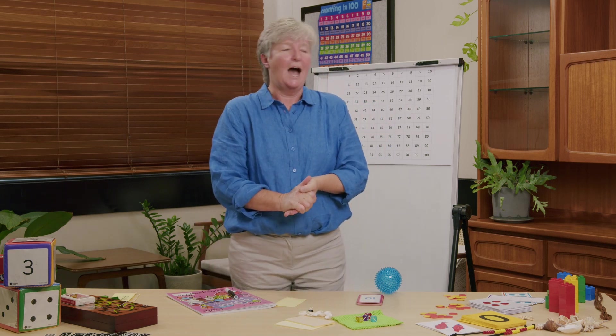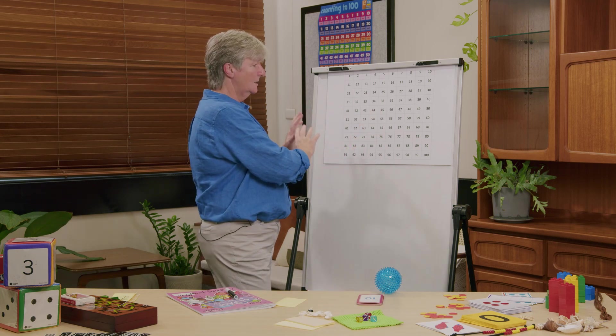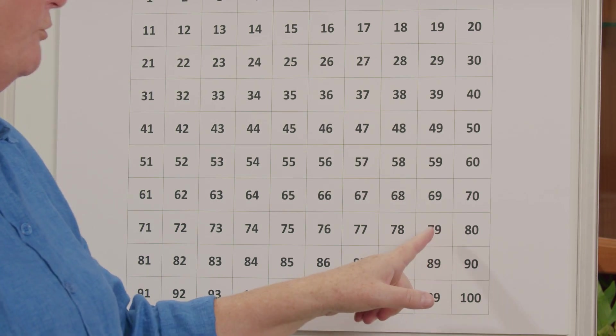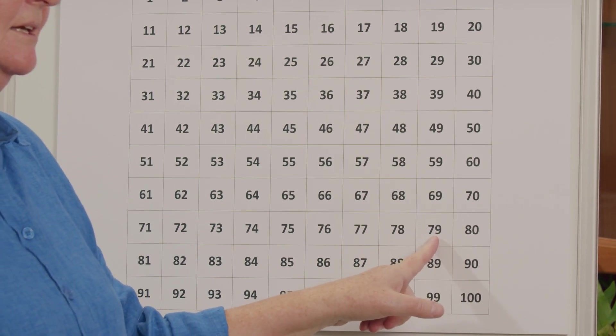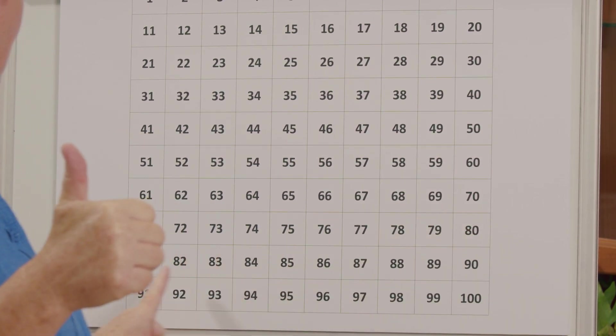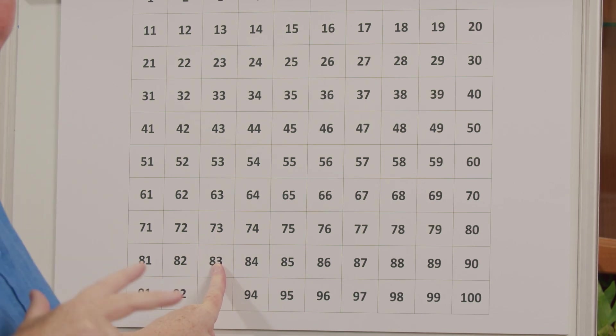I'm thinking of a number that is 4 more than 79. I'm going to give you a little time because that's a bit tricky. Can we find 79 quickly? We remember where the 70s are — 79 is almost the last one, and we want to go 4 more. We're starting here and go 4 more: 80, 81, 82, 83. Did you get 83? 83 is 4 more than 79. Well done.